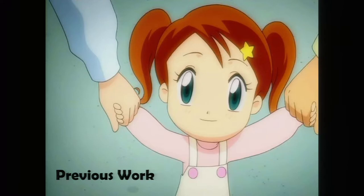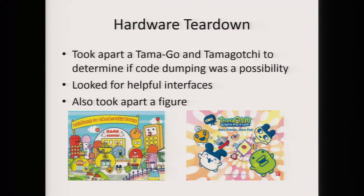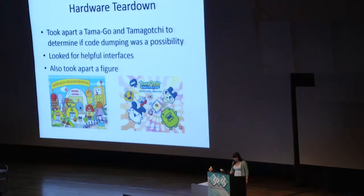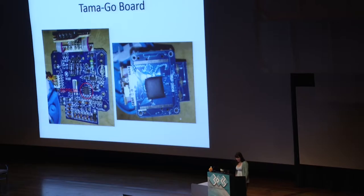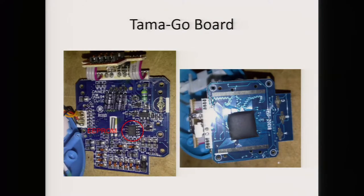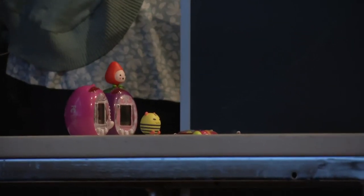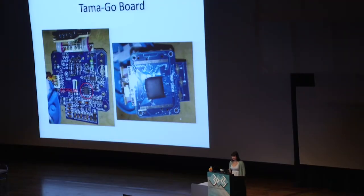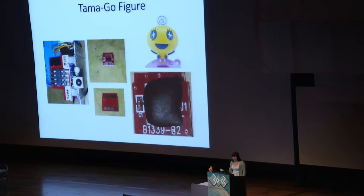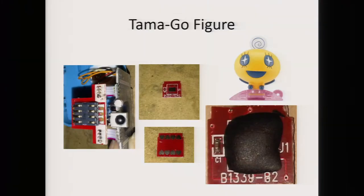I'm going to start by talking about my previous work from the last congress for about 10 minutes. When I first got the Tamatown Tamagotchi, I ran out and bought about five of them, made up some crazy story about how they were gifts for friends, and took one apart. The board has really only two interesting features: the EEPROM circled in red — the only persistent writable memory on the board that stores state, so if you need to change the battery it'll make sure you get your Tamagotchi back — and the blob on the right side, which seemed to contain the microcontroller. I also took apart a figure. Interestingly there are two types: some with an unpopulated PCB and some with a blob which I assumed had maskrom underneath.